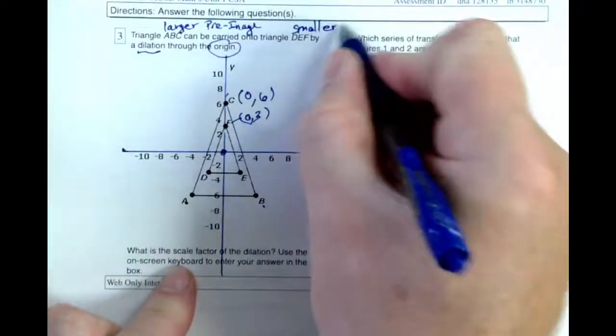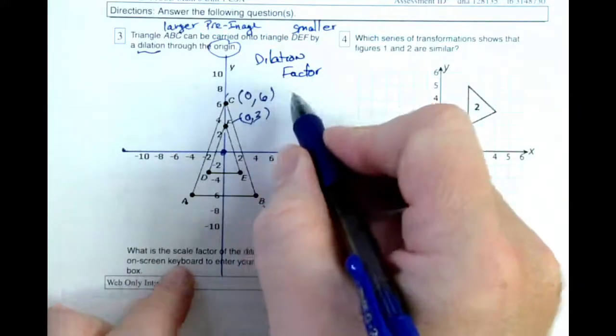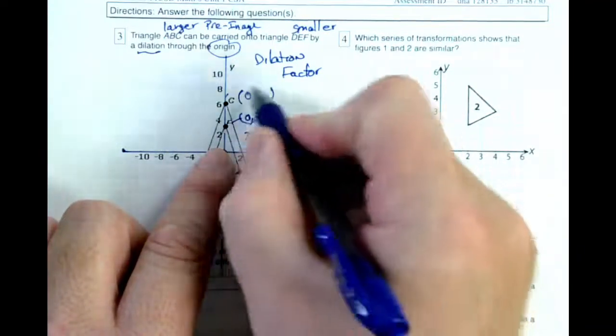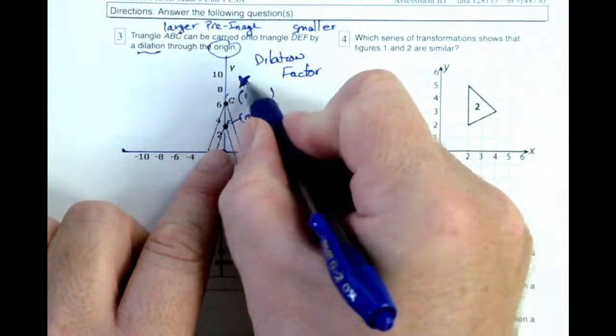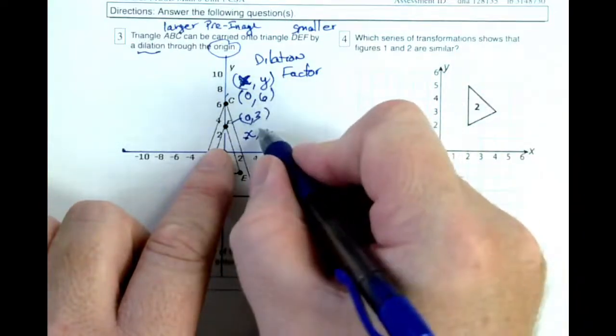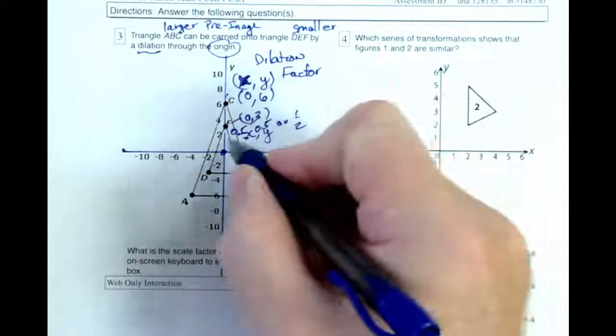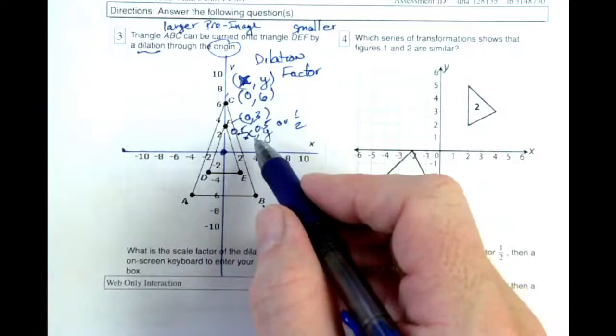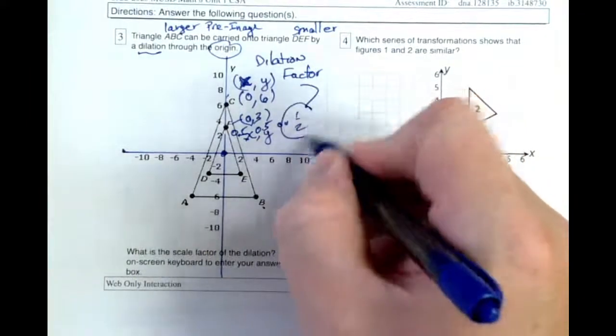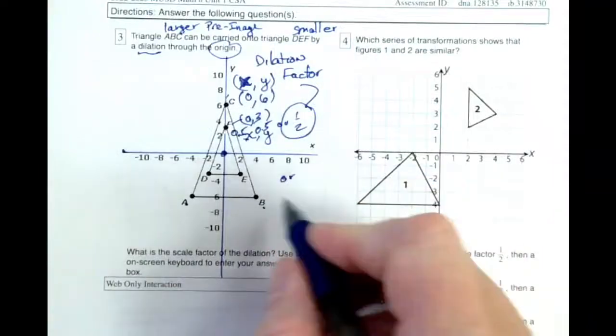So when we look for our dilation factor, we're taking, we've got to go from 0, 6. So I'm multiplying my x's and y's. Let's do it up here. This is my x and my y. I need to make, how do I get from 6 to 3? Well, I've got to multiply by 0.5 or 1 half. So I've got to do that times both. If I'm going from the origin, I've got to do it for both points. So the scale factor, I believe it's 1 half or it's 0.5.